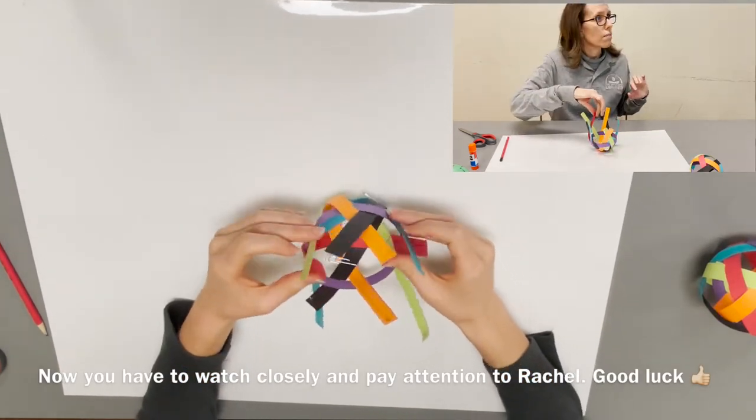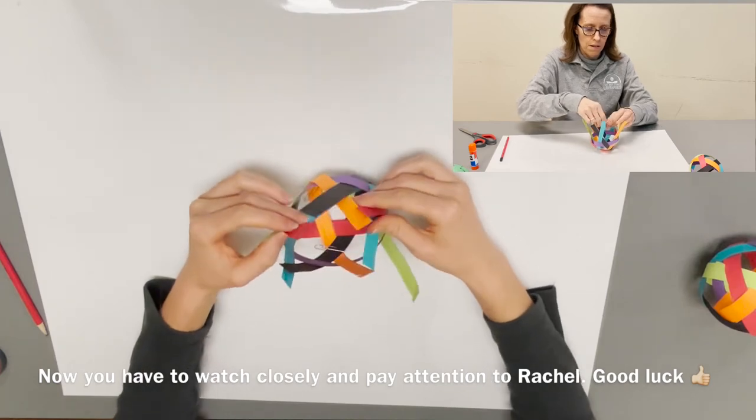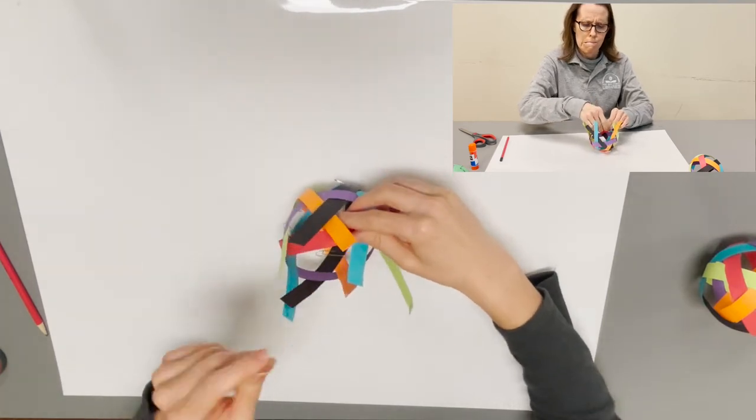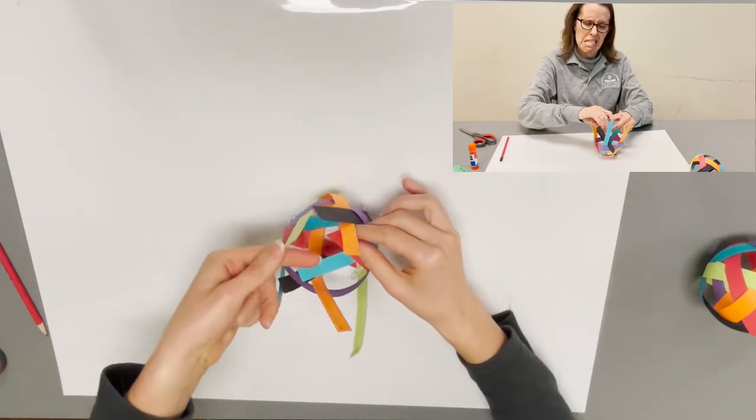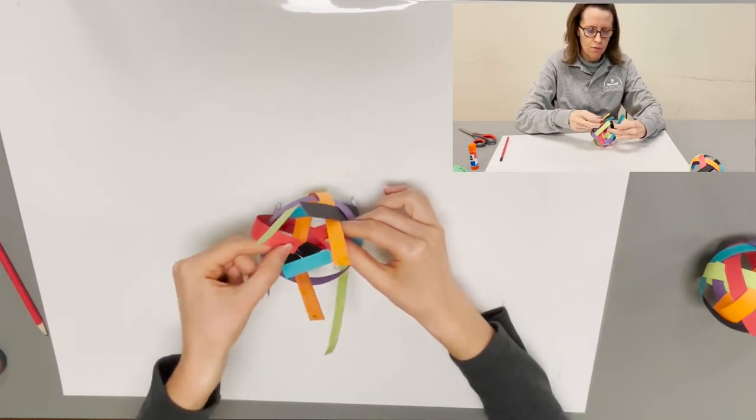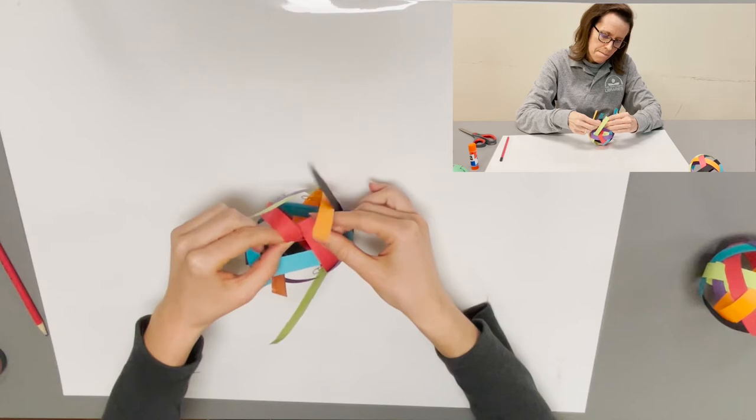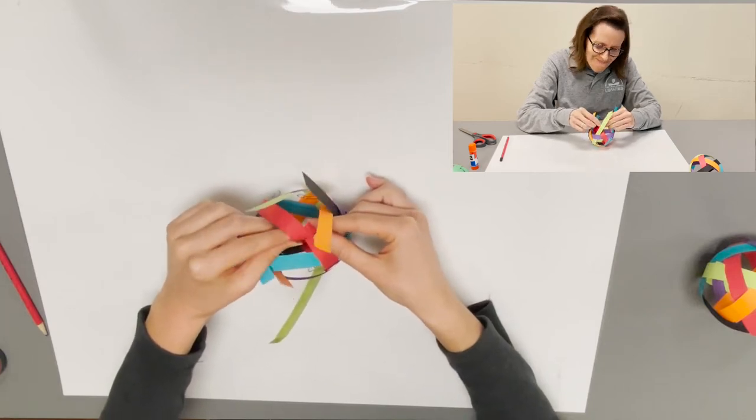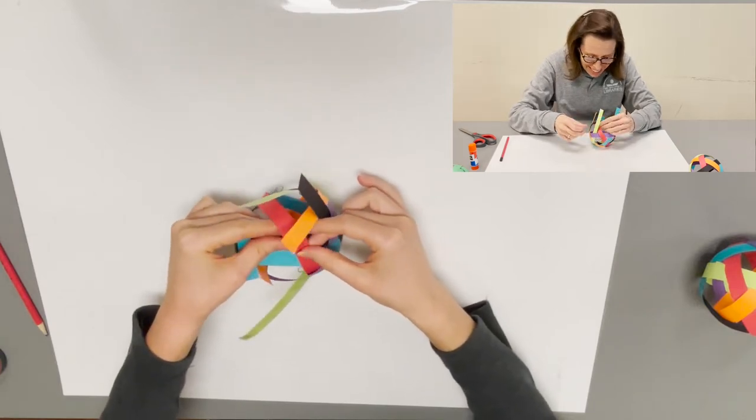You're going to take your red strip that has the number two on it together, and be sure you're getting the tabs and the numbers on the inside of your circle.